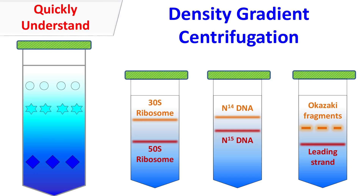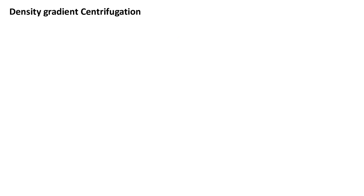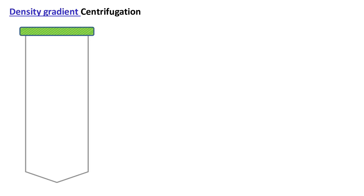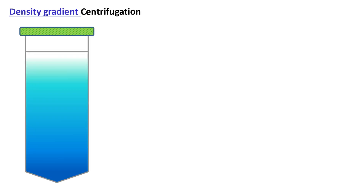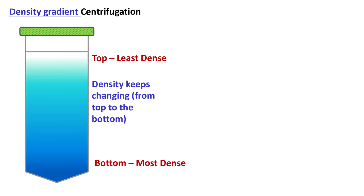Hey guys, QuickBiomasterBasics here. Let's talk about density gradient centrifugation. The term density gradient means the density of liquid in a centrifuge tube keeps changing as we move from the top to the bottom of the tube.